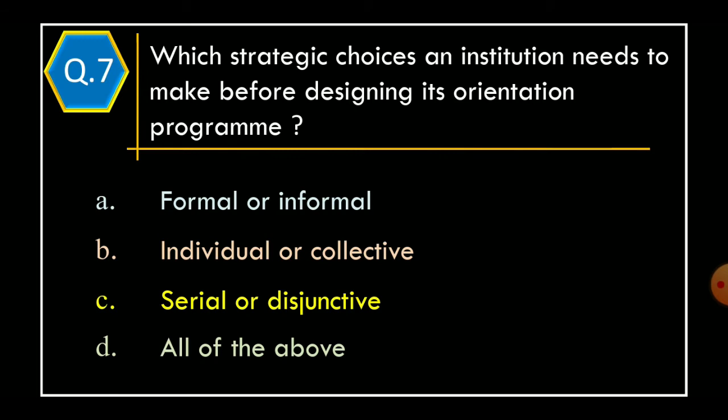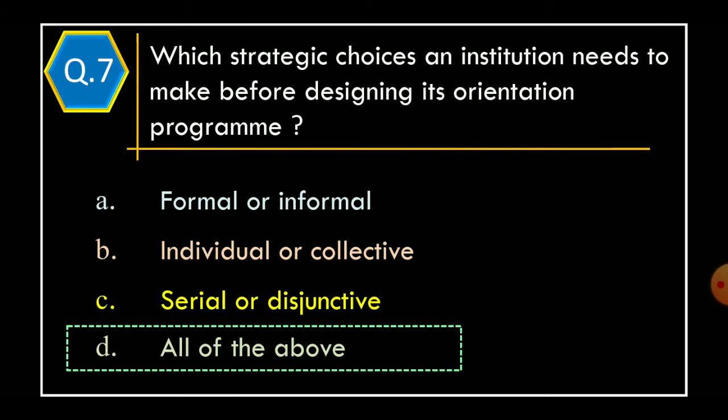Question 7. Which strategic choices does an institution need to make before designing its orientation program? Option A: Formal or informal. Option B: Individual or collective. Option C: Serial or disjunctive. Option D: All of the above. The correct option is Option D: All of the above.